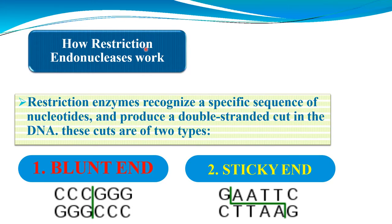Restriction endonucleases recognize specific sequences of nucleotides and produce a double-stranded cut in the DNA. These cuts are of two types: blunt ends and sticky ends. In blunt ends there is a straight cut, whereas in sticky ends we find overhangs in the DNA fragment.